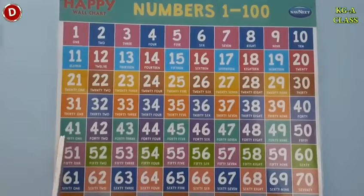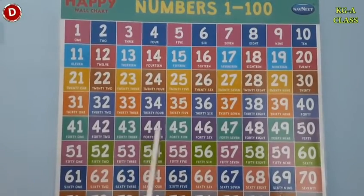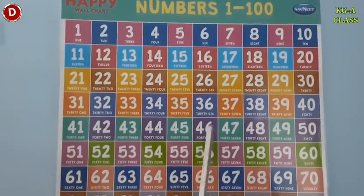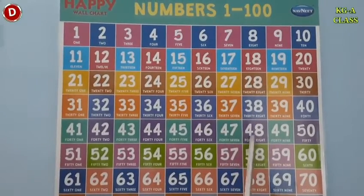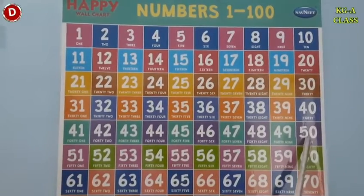After 40 children comes 41, then 42, 43, 44, 45, 46, 47, 48, 49 and here comes 50. 5, 0, 50.